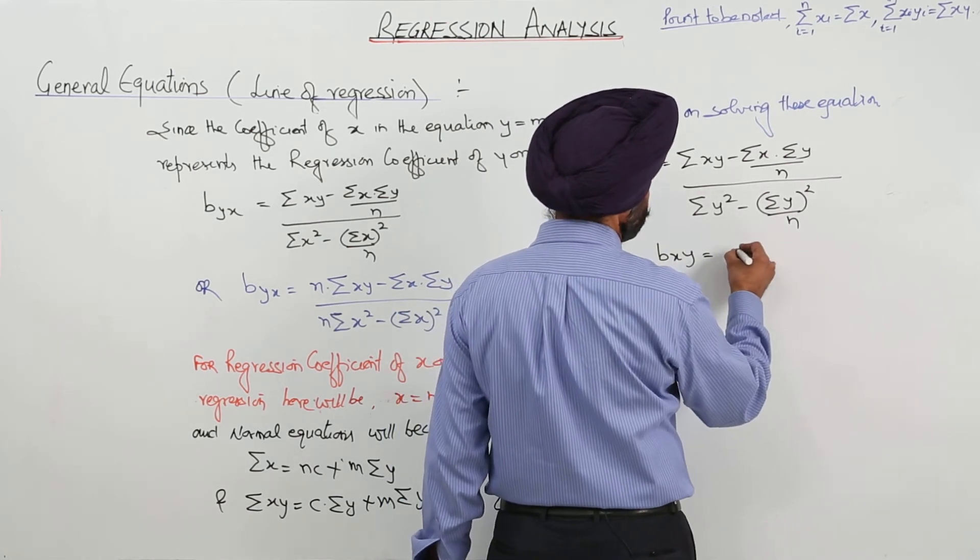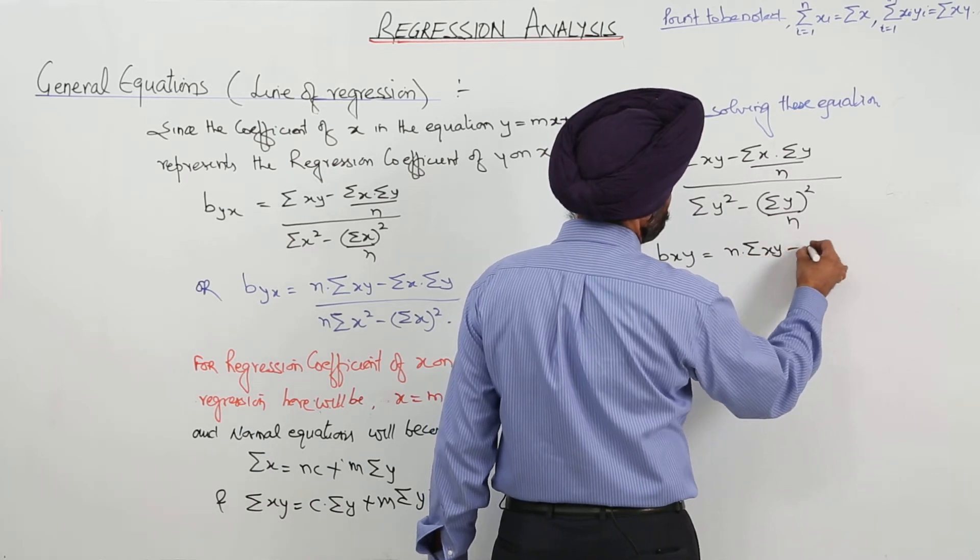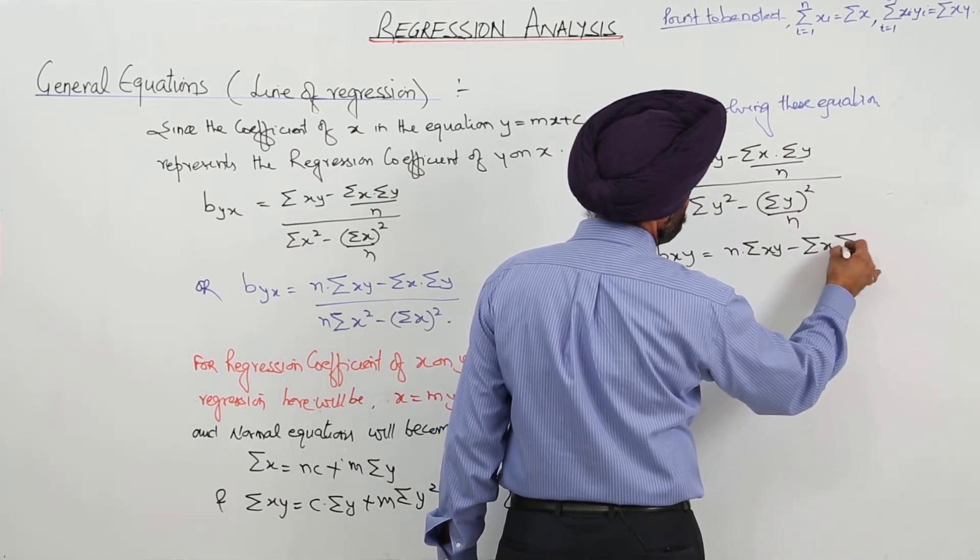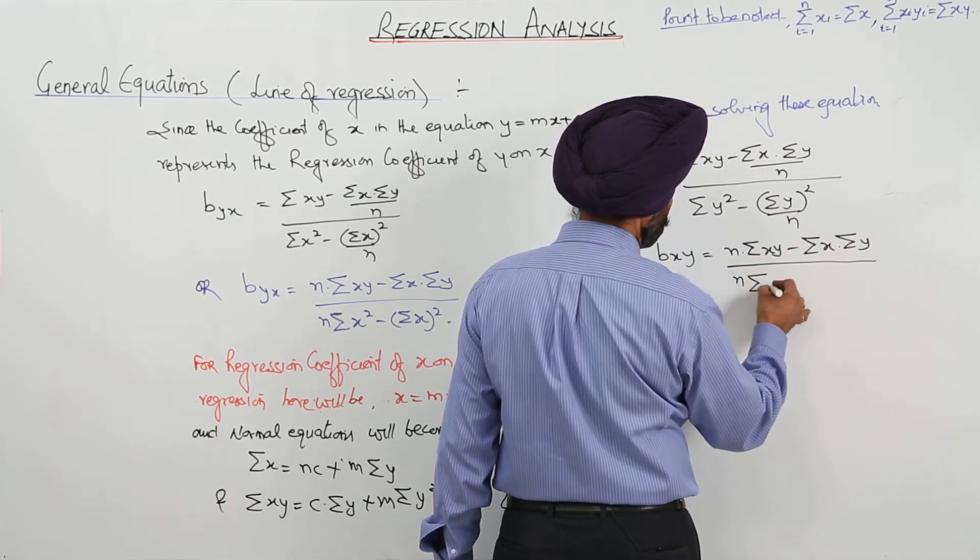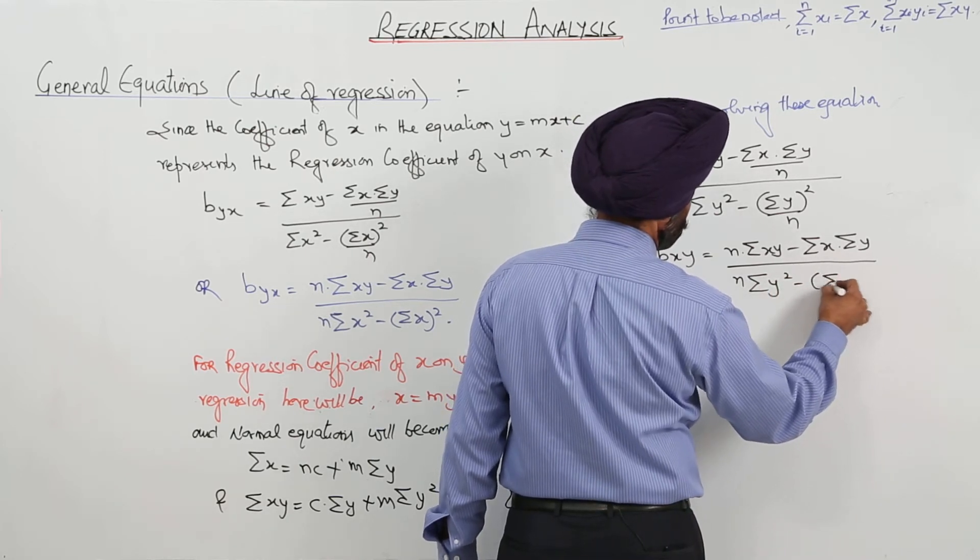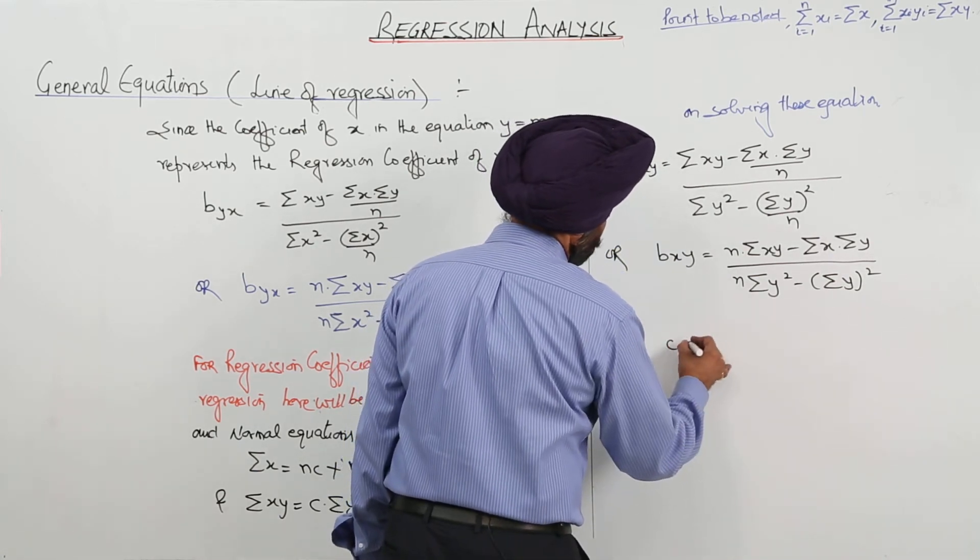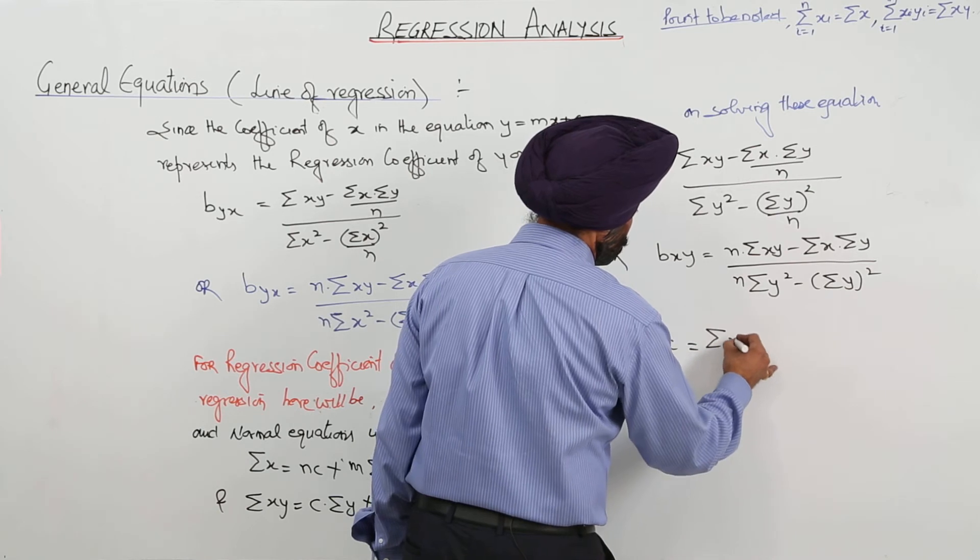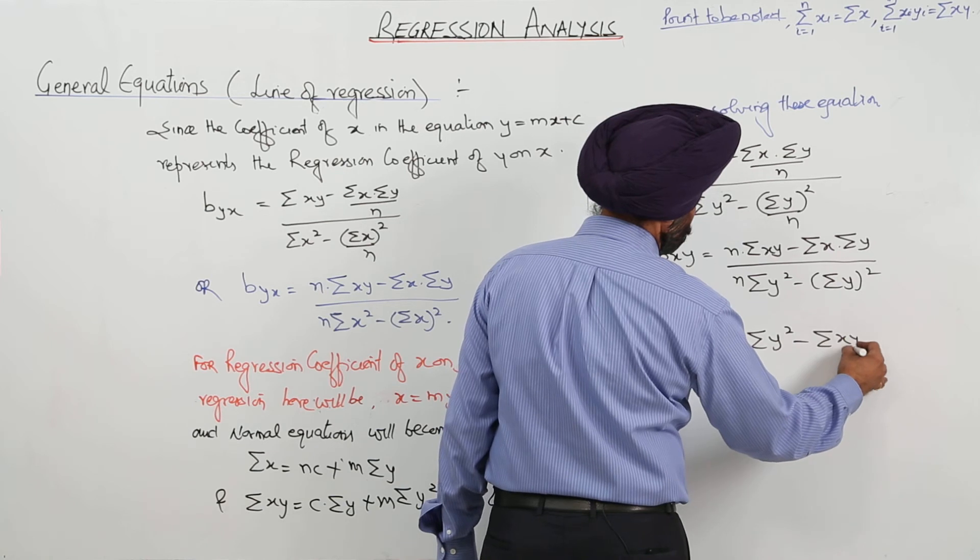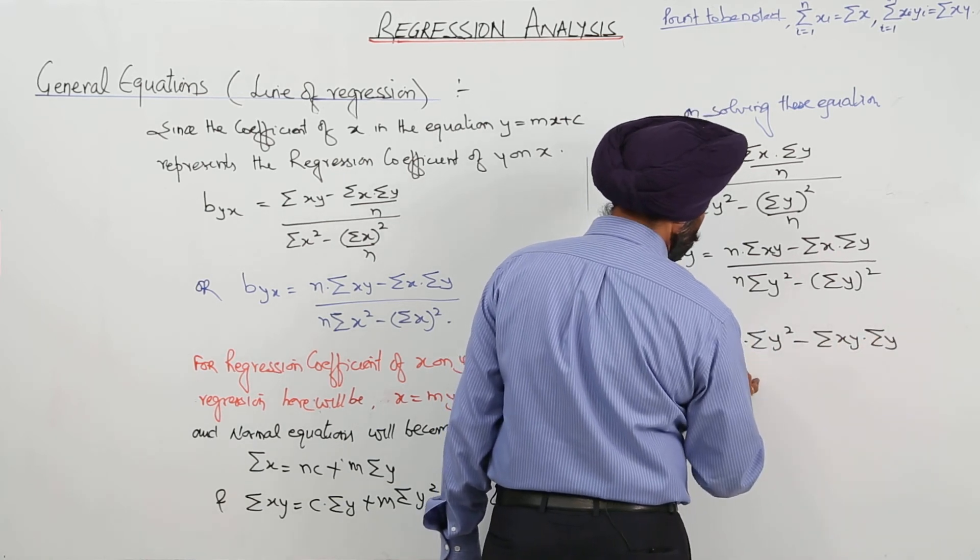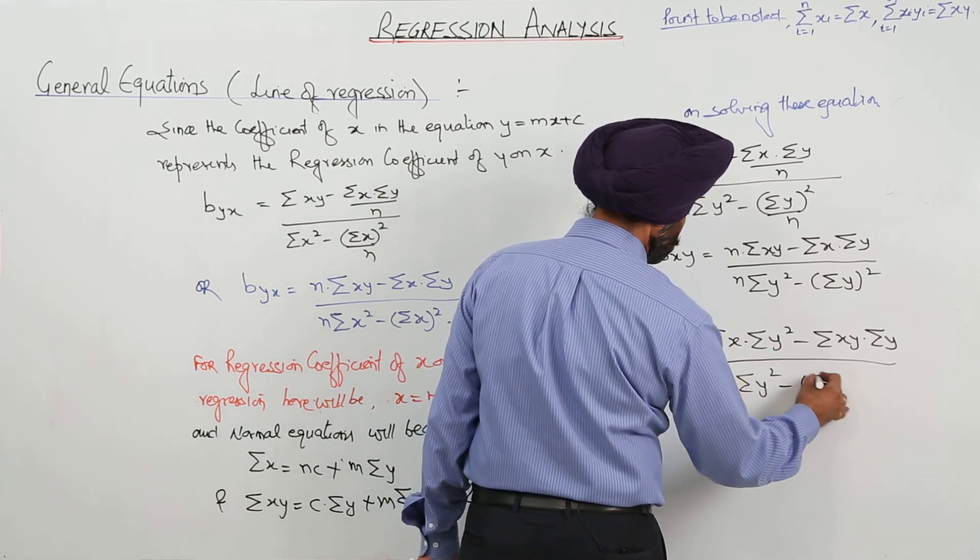Now to this, now what we can write it? n times summation of x y minus summation of x times summation of y upon n times summation of y square minus summation of y whole square. And here value of c will be summation of x minus m summation of y upon n.